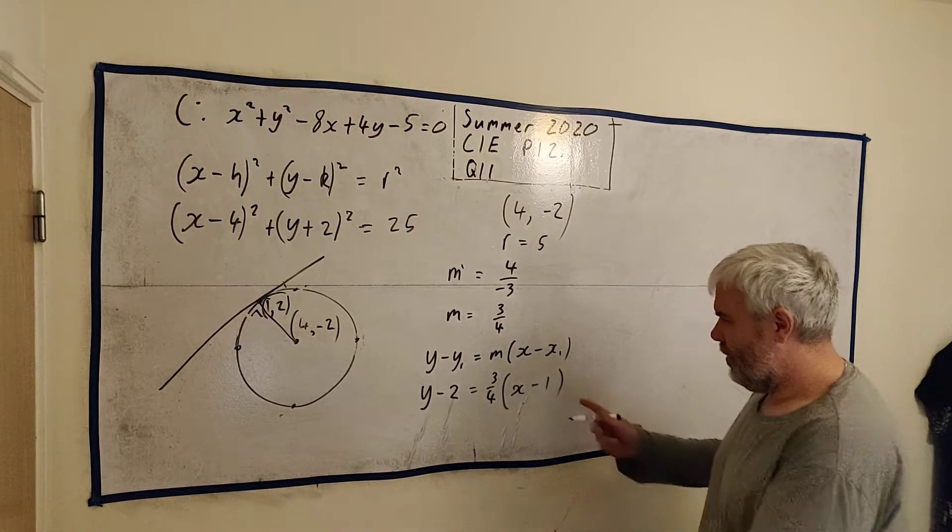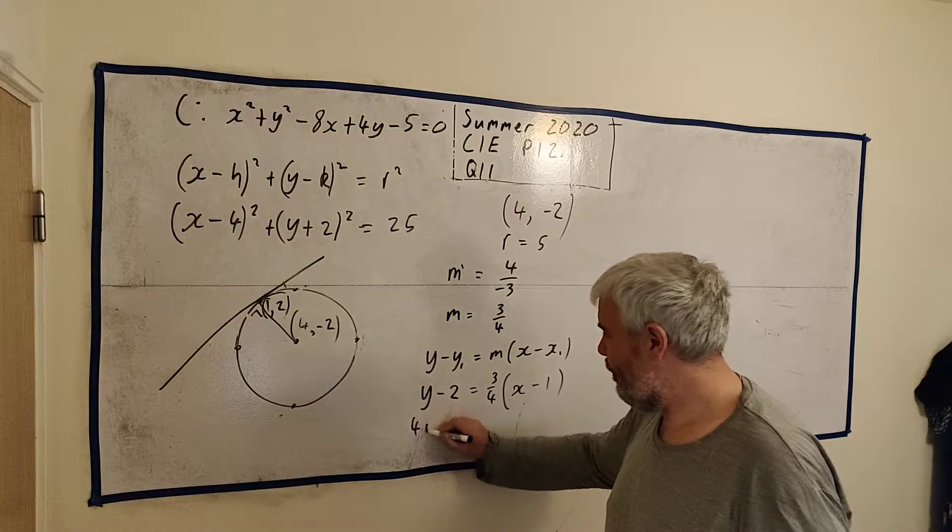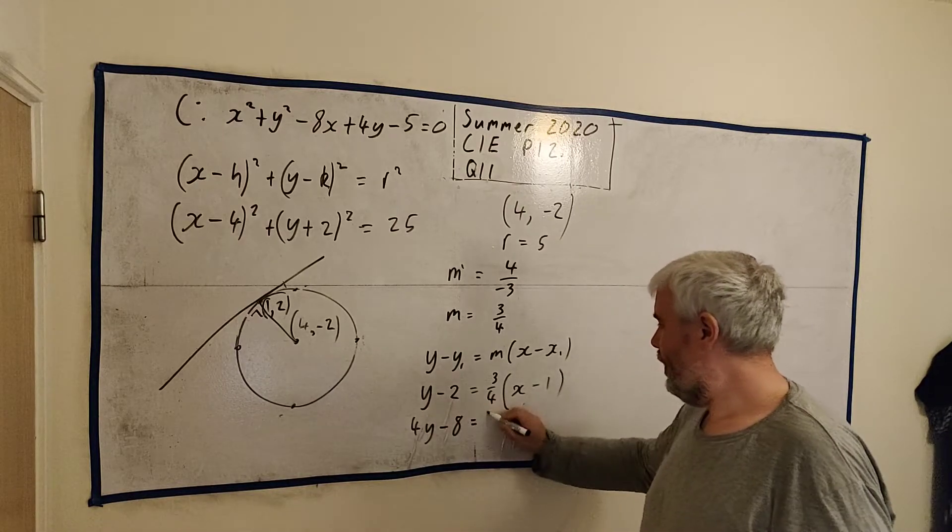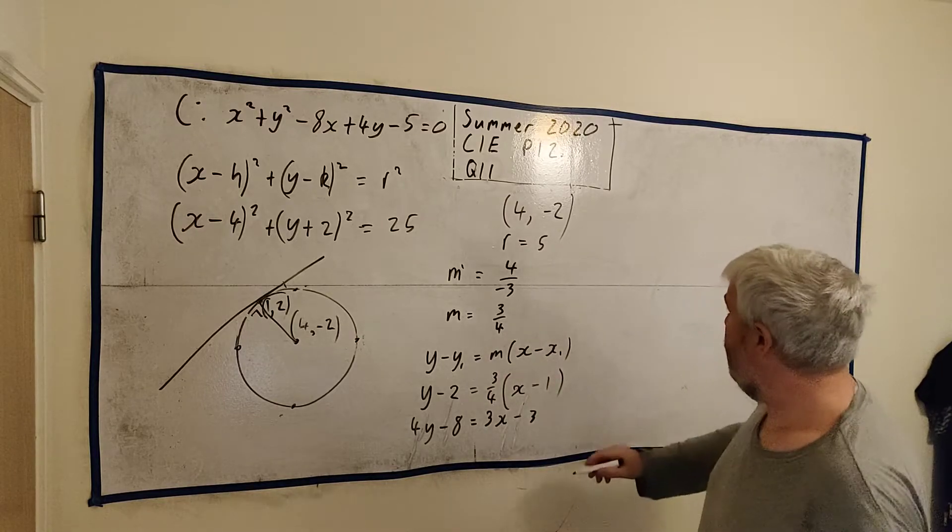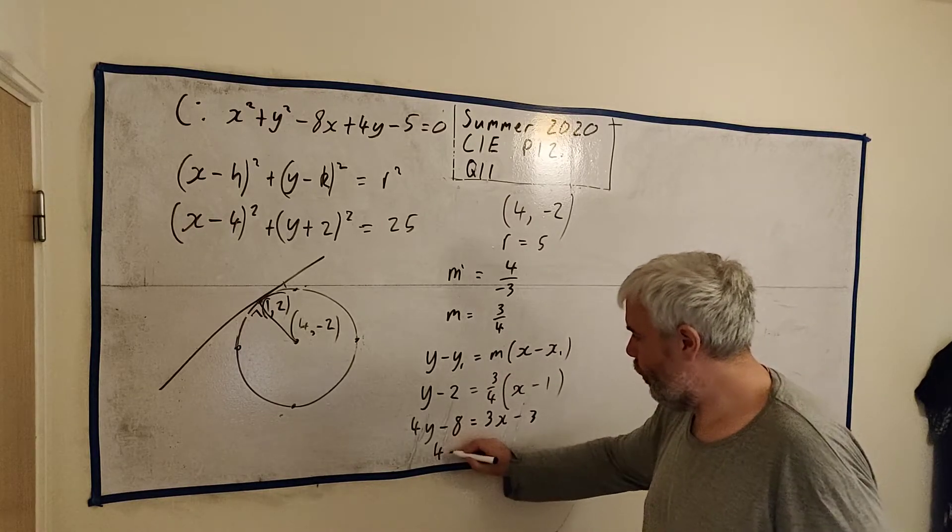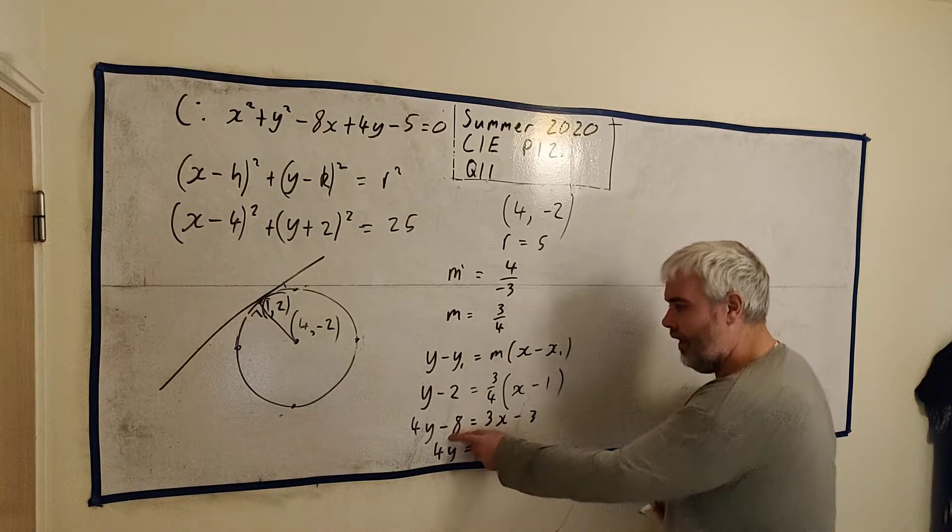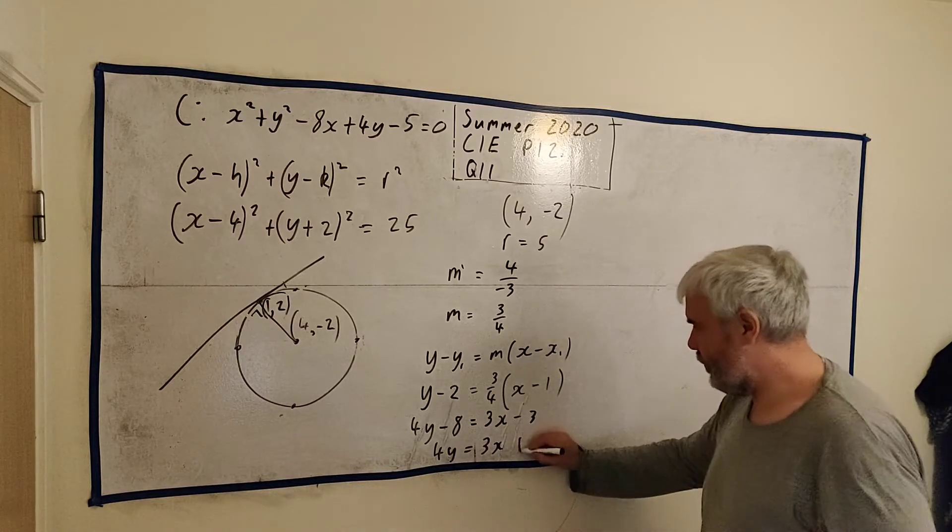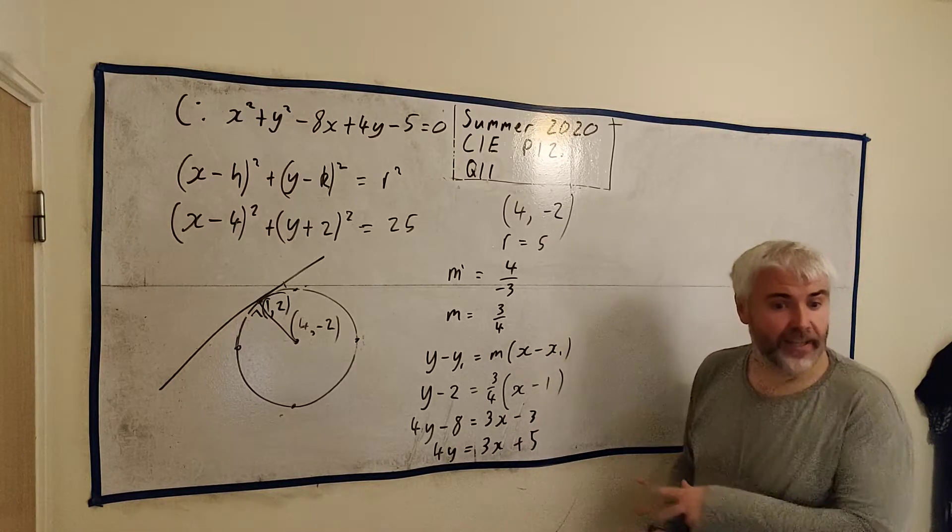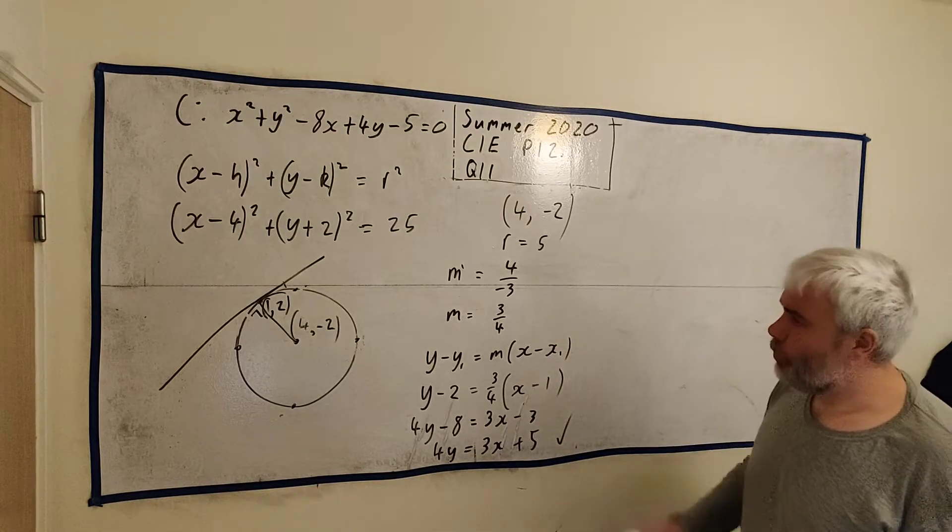And that's the equation of a line. It doesn't look like theirs. So let's play around with it and see if we can change that. Multiply everything by 4 equals 3 times x, 3 times minus 1. And we get, I'll squeeze it in here, 4y equals 3x. This turns into a plus. So 8 minus 3 is plus 5. And that is the equation they told us. That's what they wanted it to look like. So we have confirmed that.